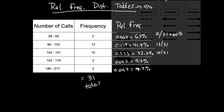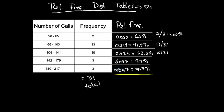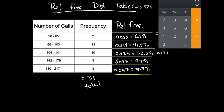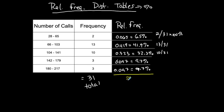These are the relative frequencies for this frequency table — this column simply replaces the frequency column. As a quick check, the percentages should add up to approximately 100%: 6.5 plus 41.9 plus 32.3 plus 9.7 plus 9.7 is approximately 100%. A squiggly equal sign means approximately — any deviation is just due to rounding.